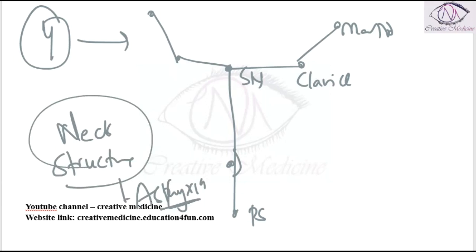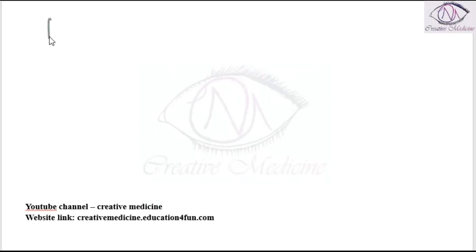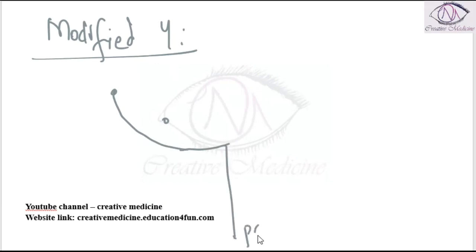3. Modified Y-shaped incision. Modified Y-shaped incision runs from anterior axillary fold and then down to the breast up to the sternum and then down to the pubic symphysis. This is mainly used for cosmetic purposes, especially in case of females.